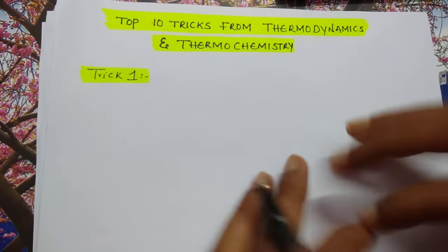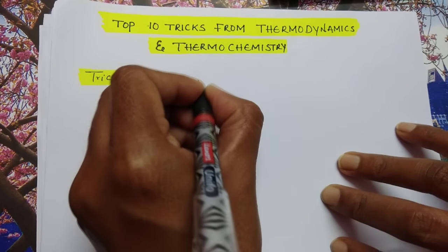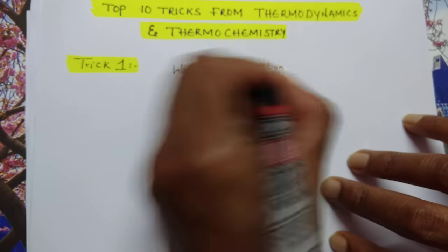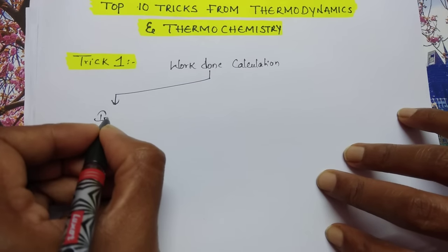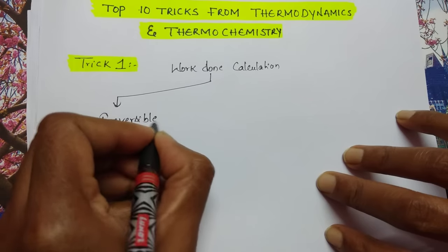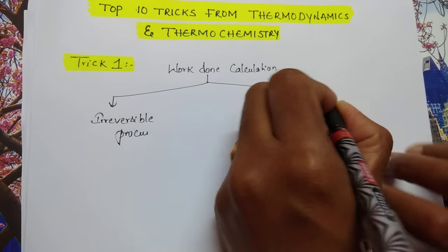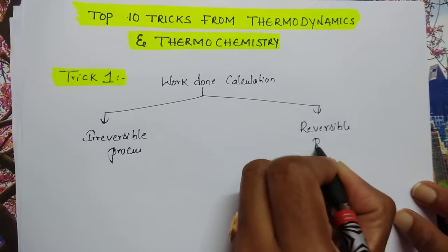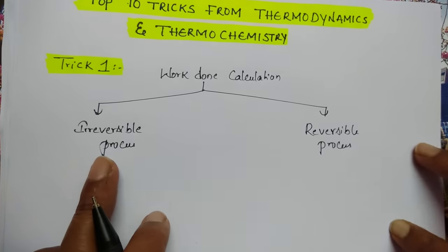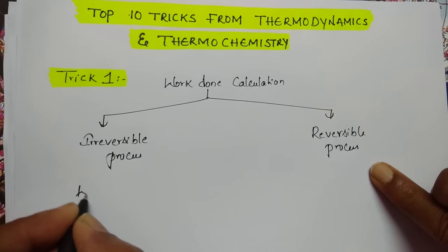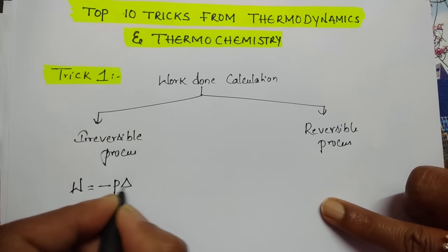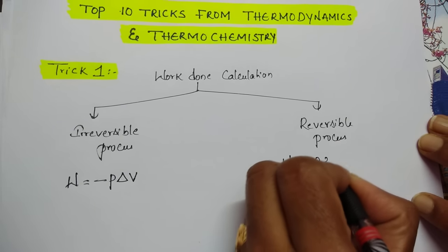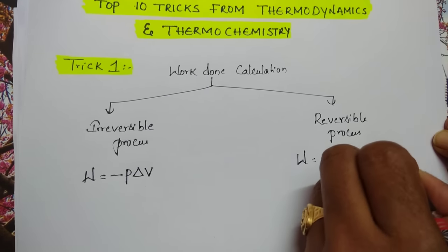Coming to work done calculation problems, we have two processes: one is isothermal irreversible process and another one is isothermal reversible process. For both processes the formula is different. For irreversible process, the formula is W = -PΔV. For reversible process, the formula is W = -2.303nRT log(V2/V1).